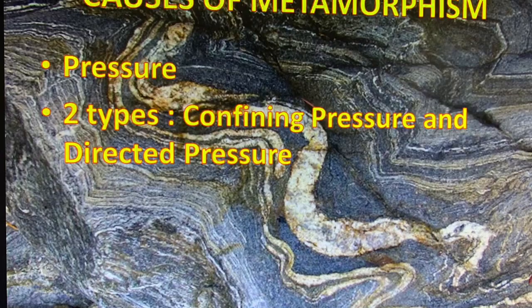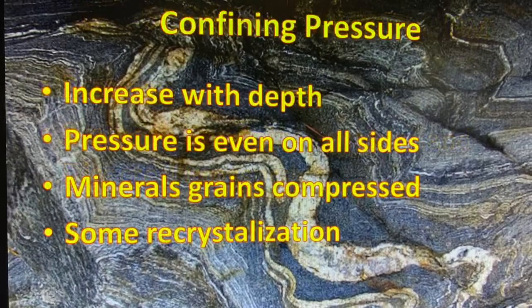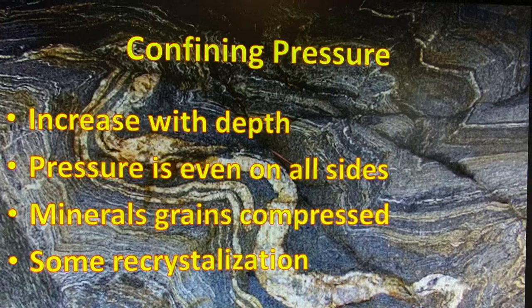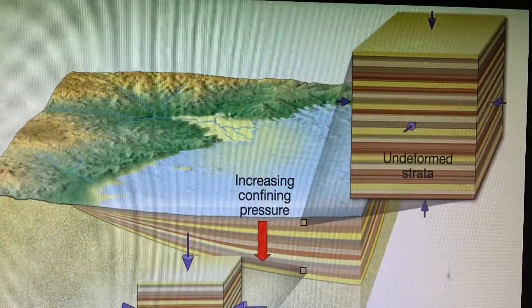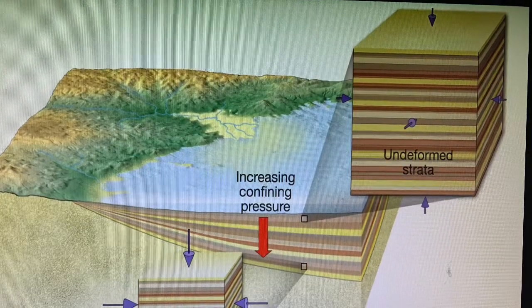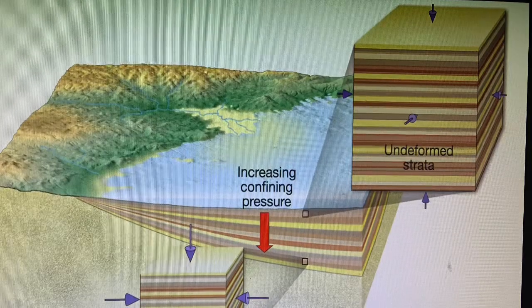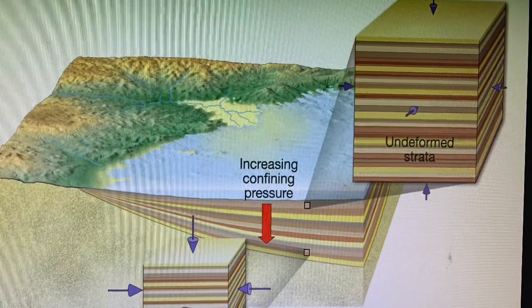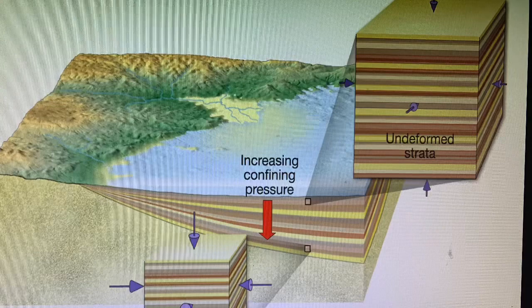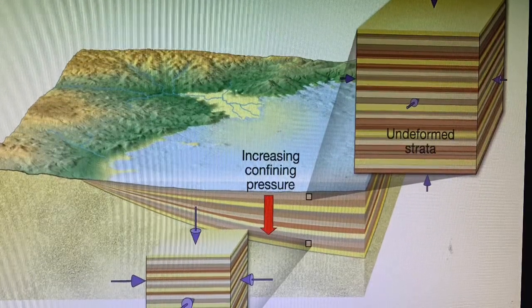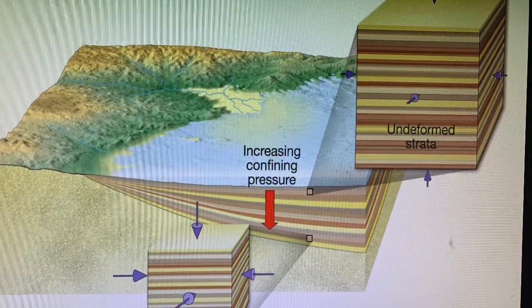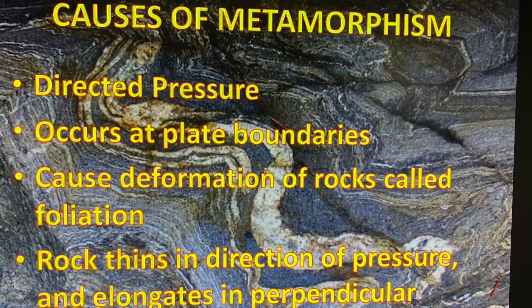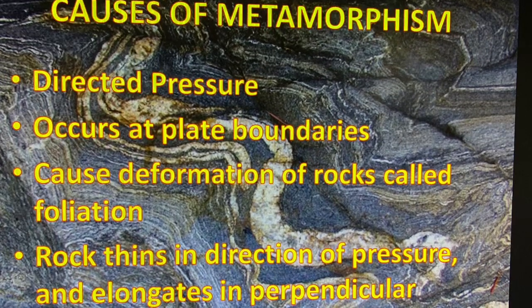The second cause of metamorphism is pressure, and there are two types. Confining pressure occurs as you bury something deeper — pressure increases evenly on all sides. Because it's equal in all directions, the mineral grains get compressed but not deformed dramatically. Looking at the picture, you can see how strata — layers — have gotten smushed and are not as thick anymore due to confining pressure.